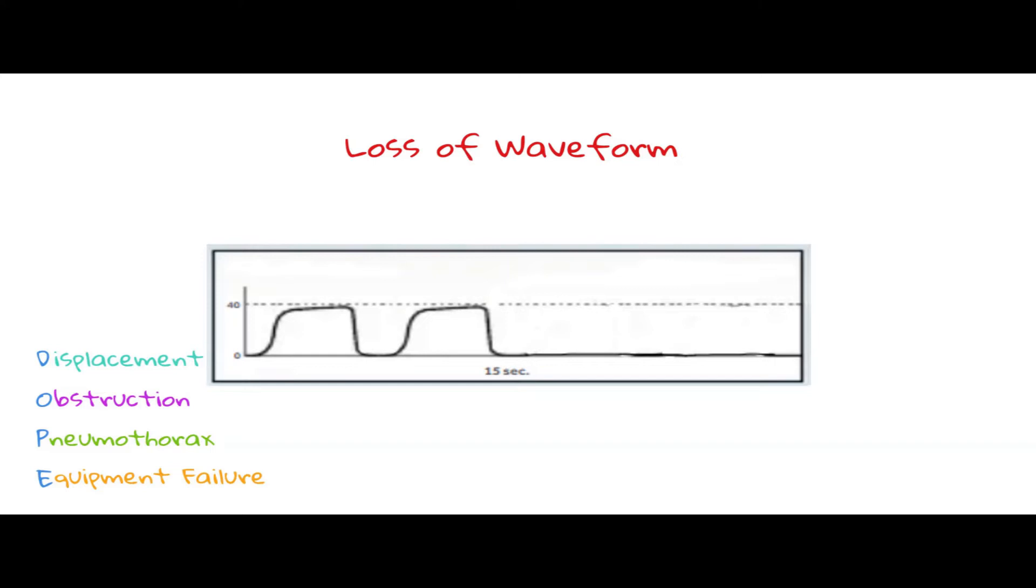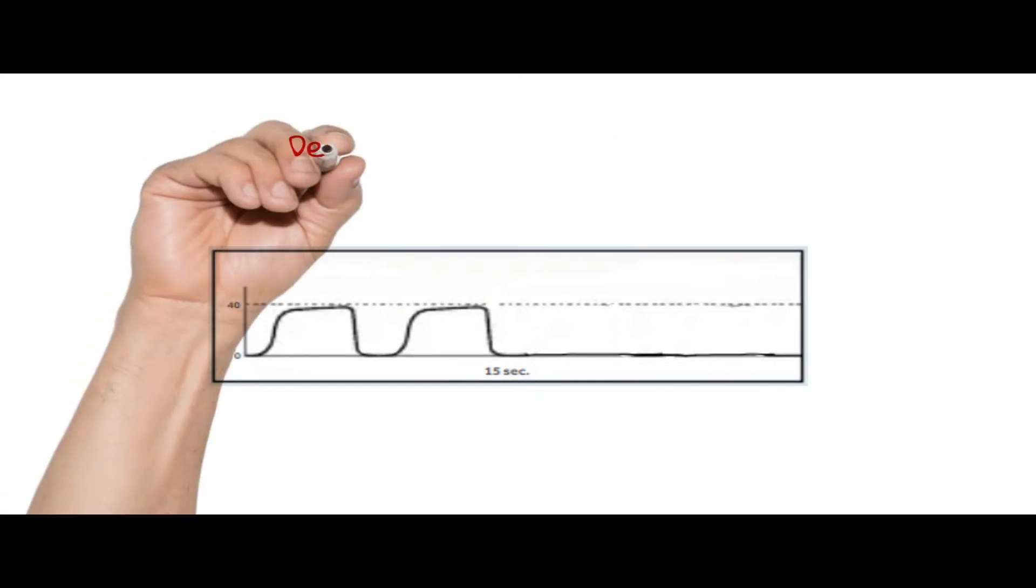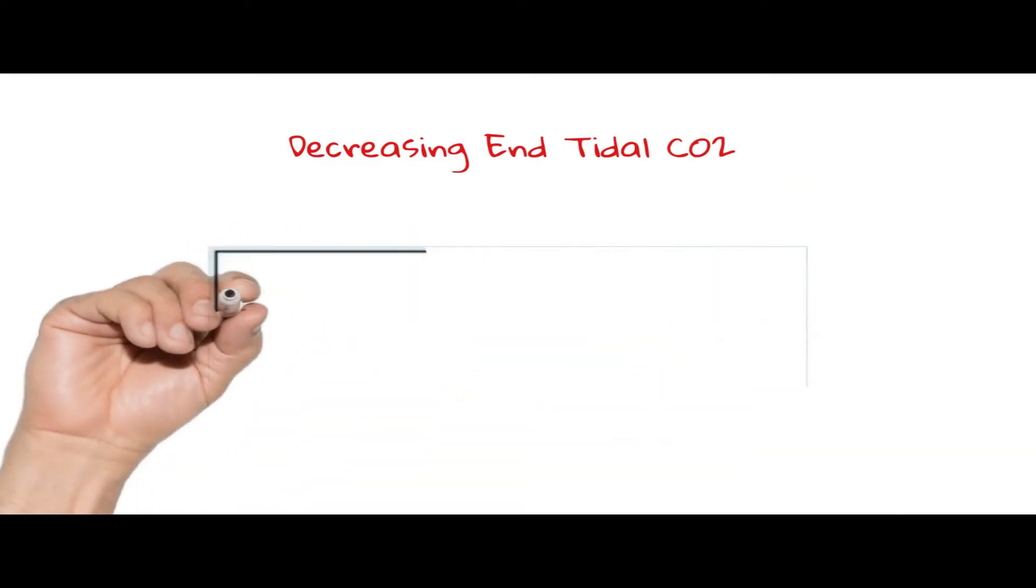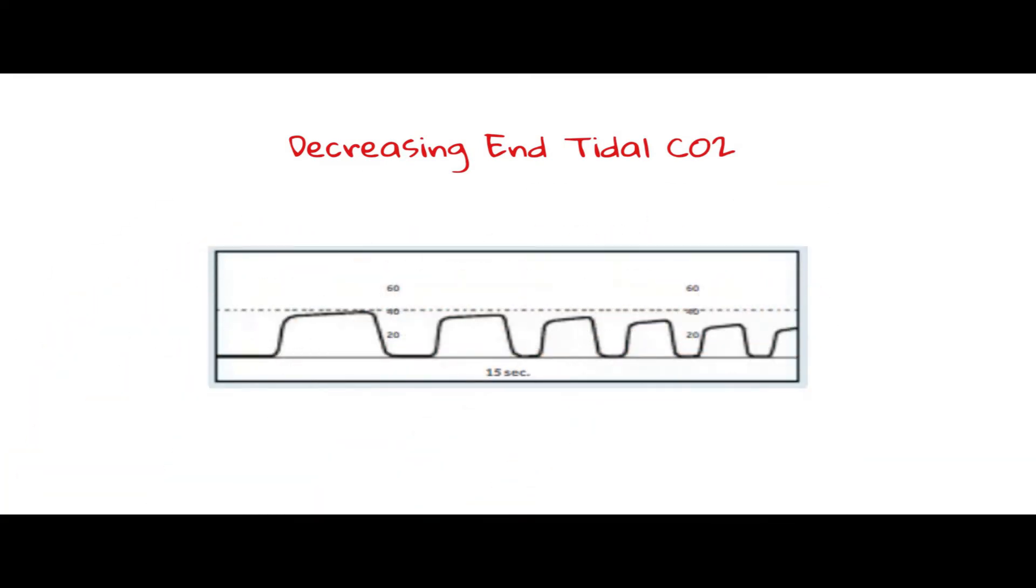Decreasing end tidal CO2 is usually the result of hyperventilation. Sometimes this is the result of an intentional choice to normalize CO2 in a hypercapnic patient, and sometimes it indicates the need to modify ventilation parameters to maintain normal CO2. Hypothermia and decreased metabolism can also cause decreasing CO2.